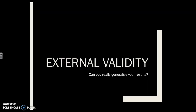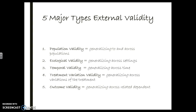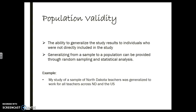Now let's talk about external validity. This has to do with generalizing your results, and yes, this starts with a large sample size because we need a good sample in order to generalize to a different group. But really we're talking about who, what, and when can we generalize to? There are a bunch of different types, and not all of them will be appropriate for every study, so you pick and choose what makes sense.